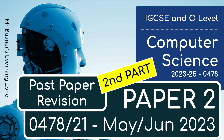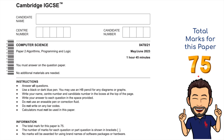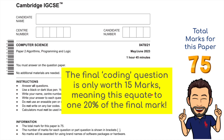Hello and welcome back to part 2 from the May-June 2023 paper for Computer Science 0478-21. This paper is out of 75 marks, but we're only going to be focusing on the final coding question. It's only worth 15 marks. There is no scenario question anymore. If you don't get a scenario question in January, the programming question — the coding question — has been included in the paper as a blind question. You don't see the question until you get into the exam. Being 15 marks, 15 out of 75 is 20% of the final mark for this paper.